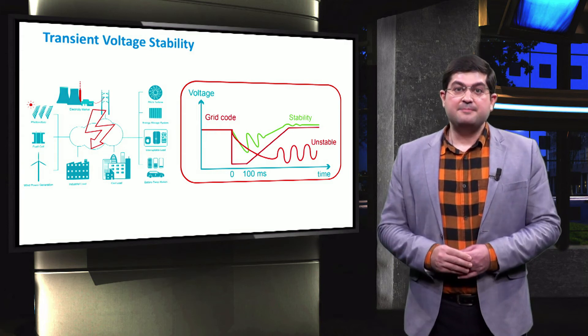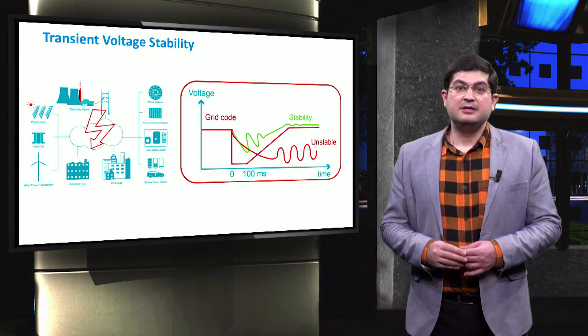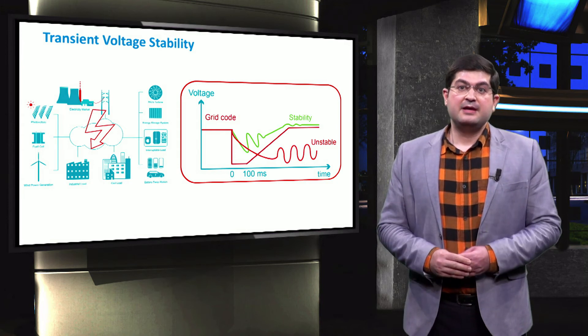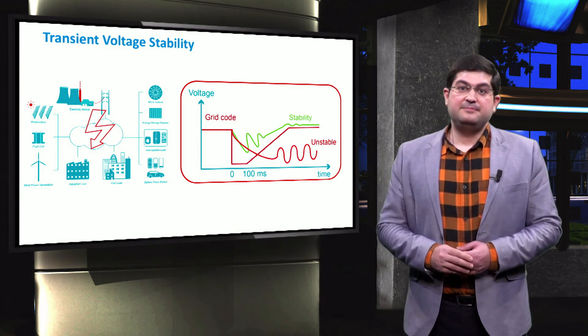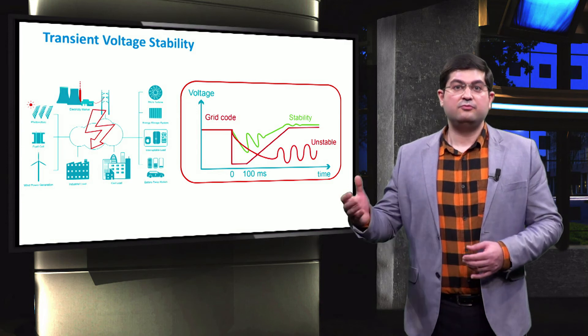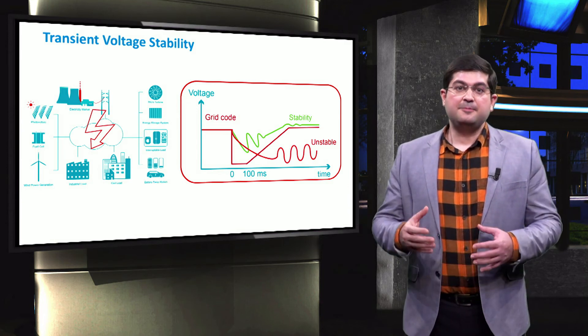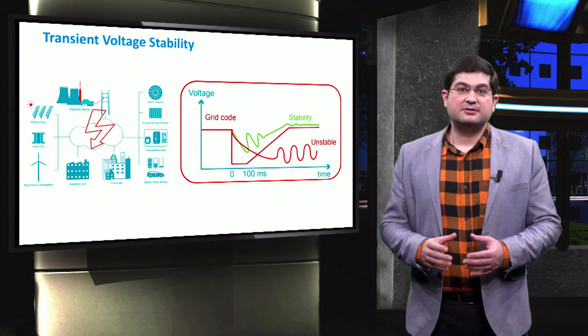then the microgrid shall be able to go through the fault during this time period and maintain its stability, which is also called low voltage ride-through, that typically takes about a few hundredths of milliseconds.